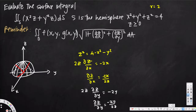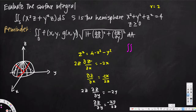Now let's set up the double integral. We need f(x, y, g(x,y)) but expressing z explicitly is difficult. From x² + y² + z² = 4 we have z² = 4 − x² − y². Taking the square root directly would be hard, so we will use a simplification.